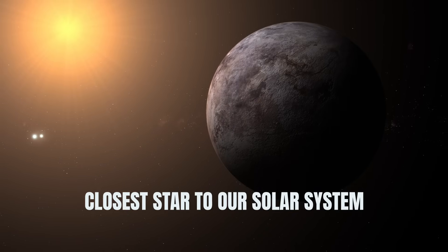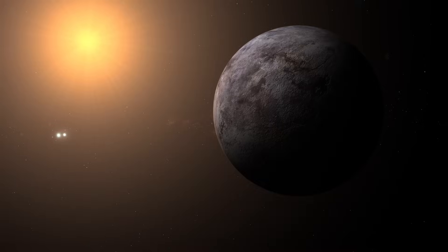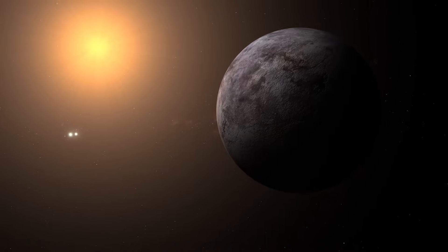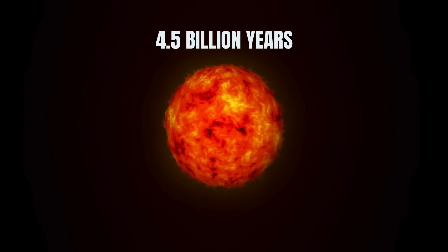Alpha Centauri is the closest star to our solar system. It is currently known that exoplanets are orbiting this star, and it will be much closer in the future, so it could be humanity's future home when the Sun dies in 4.5 billion years.